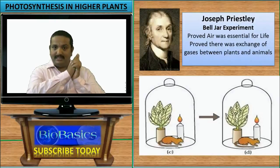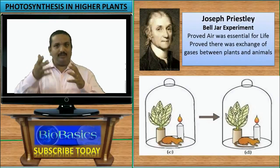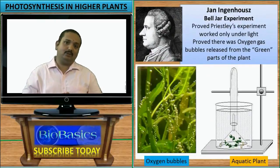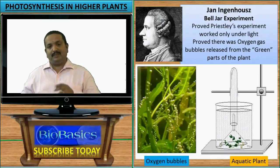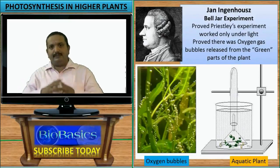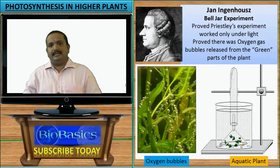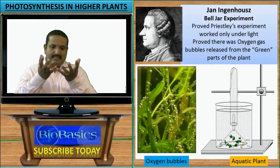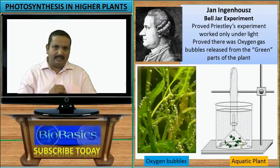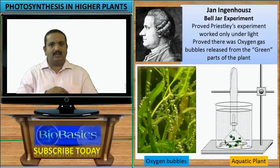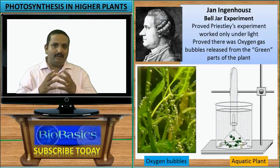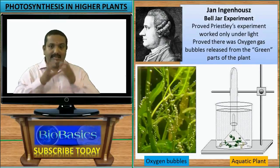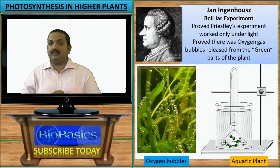After a few years, another scientist named Jan Ingenhousz did similar experiments to Priestley's, but proved that Priestley's results worked only under light. He used aquatic plants and found that the experiment did not work in the dark. In the light, small bubbles appeared on the surface of the leaves. These gas bubbles were studied and found to be oxygen molecules. He also found that only the green parts of the plant released these oxygen bubbles, and only during the day — an interesting revelation.